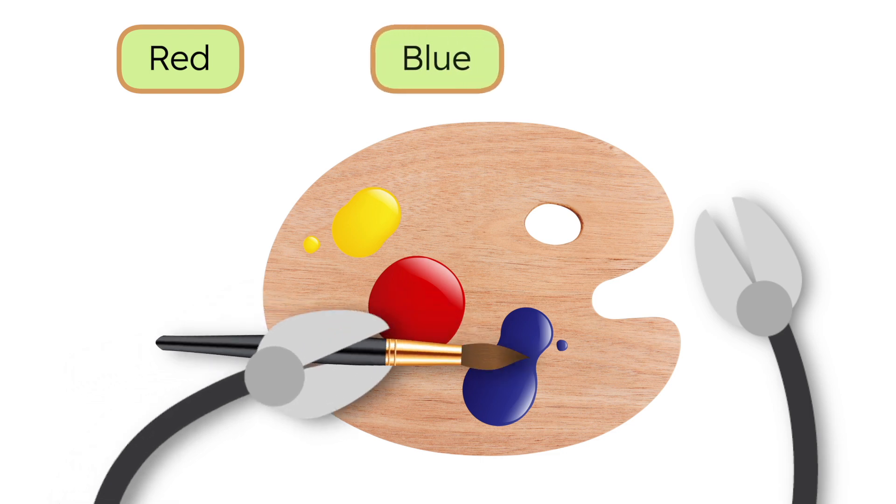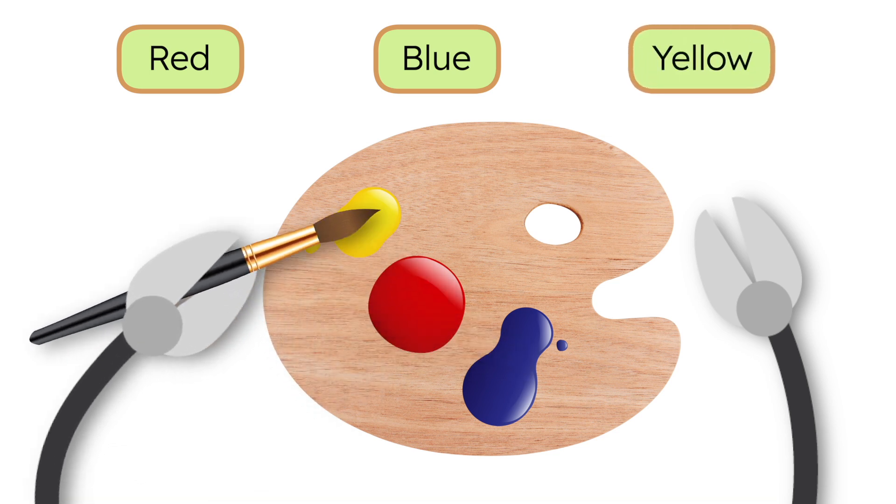And here's blue. This color is so calm and cool, like the sky or a lake. Isn't it beautiful on its own? And last, we have yellow. This color feels warm and bright, like a sunflower or the sunshine.